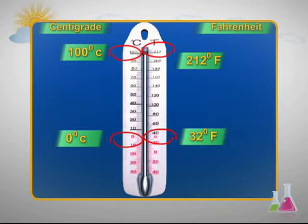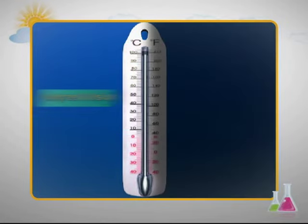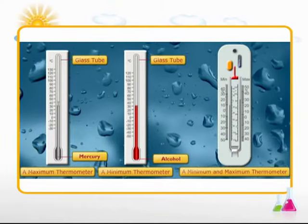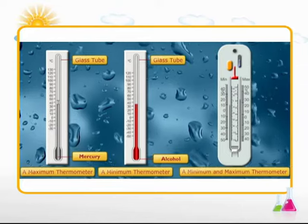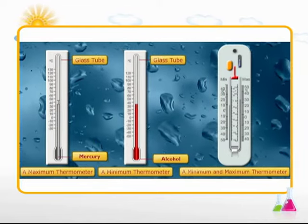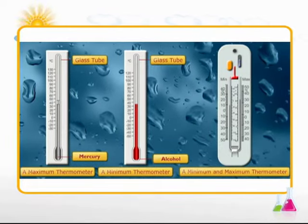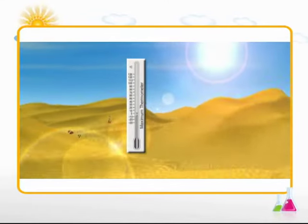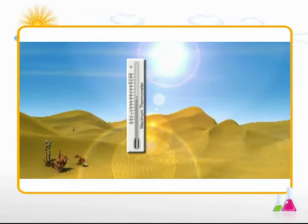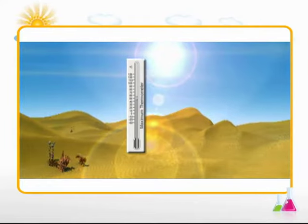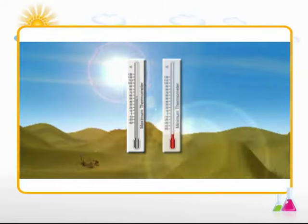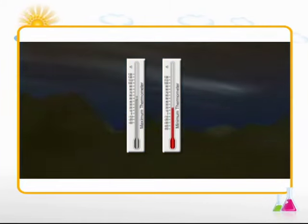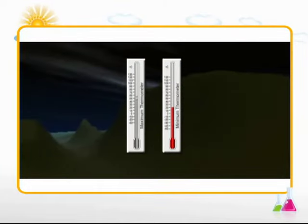The standard unit of measuring temperature is degrees Celsius. The thermometer is an instrument made of a glass tube containing a liquid — either mercury or alcohol. The highest temperature reading for a day is known as the daily maximum temperature. The lowest temperature reading for a day is known as the daily minimum temperature.